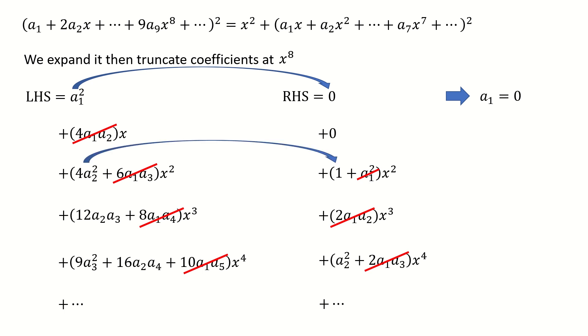And then we compare the coefficient for the x square term. So we got here. And then let's compare the coefficient for the x cube. For the right hand side, because a1 is 0, so the coefficient equal to 0. So that means the coefficient of the left hand side must be 0. And because a2 is not 0, so that means a3 must be 0. So we got a3 equal to 0.